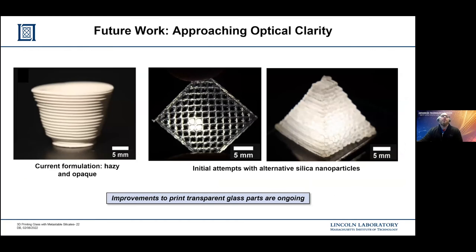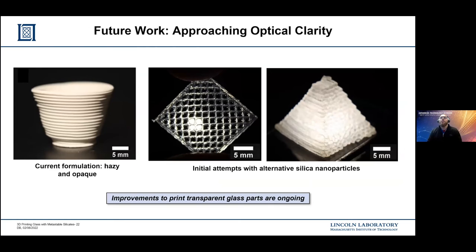Some of our future work is approaching optical clarity. Right now, current formulations with structural silica fillers are hazy and opaque, but initial attempts by introducing fillers with index-matched features to our binder chemistry show some promise in producing transparency at low processing temperatures. Another approach we'd like to take is investigating different fillers that we can use for low-temperature sintering to accomplish transparency under 500 degrees Celsius. These improvements are currently ongoing.